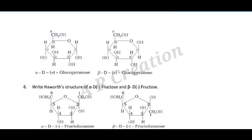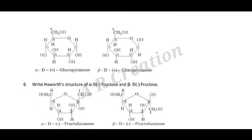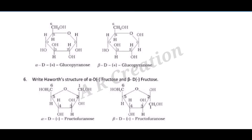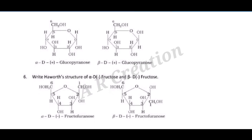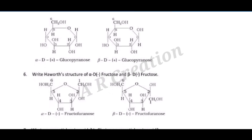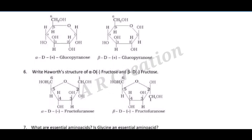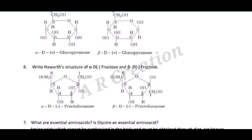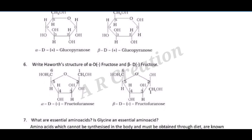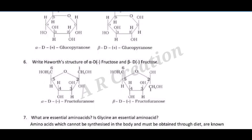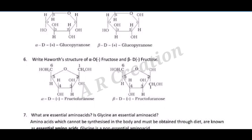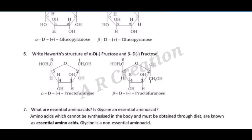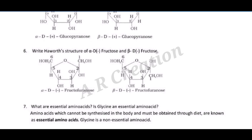Question seven: what are essential amino acids? Is glycine an essential amino acid? Answer: amino acids which cannot be synthesized in the body and must be obtained through diet are known as essential amino acids. Glycine is a non-essential amino acid.